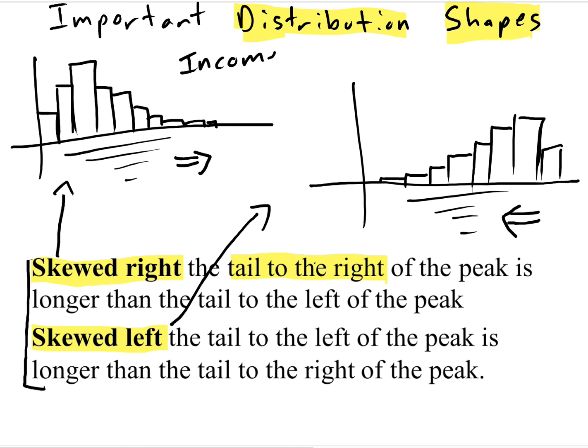Income has a skewed-right distribution. There are a lot of people that have a lower income, and as you talk about rich people, there are fewer numbers of people. What this vertical axis really is the frequency.